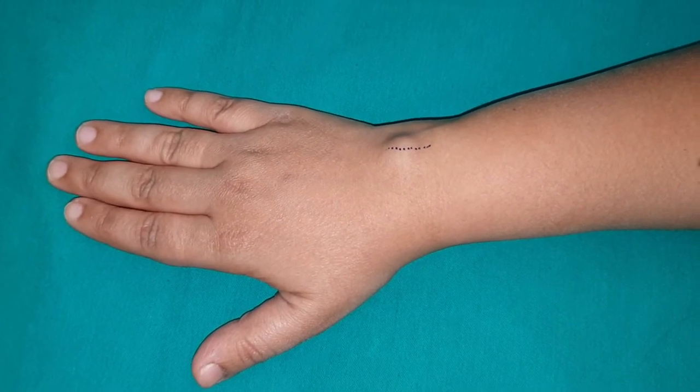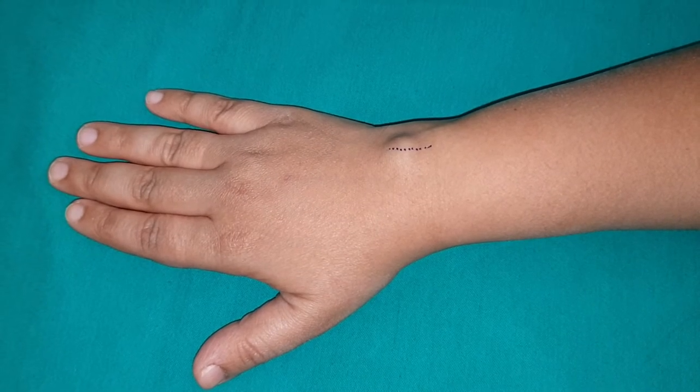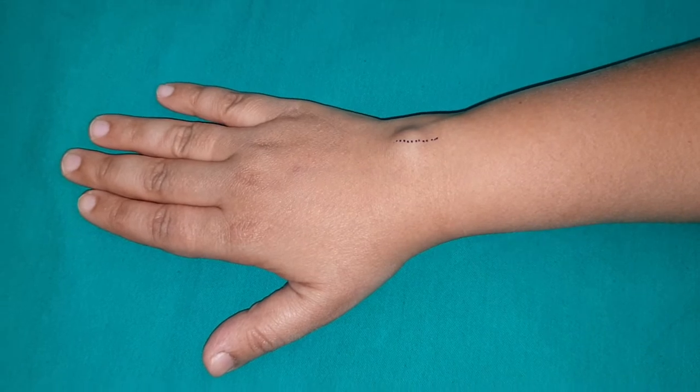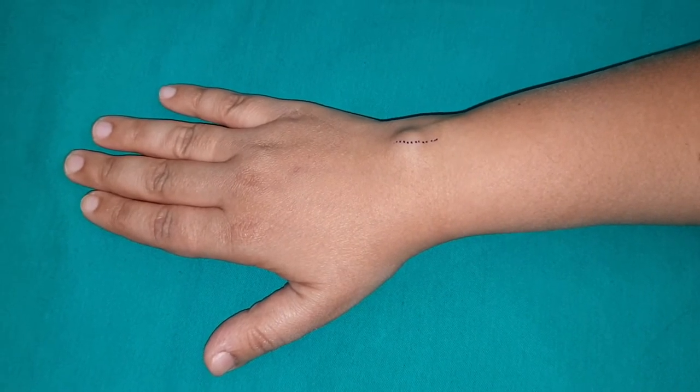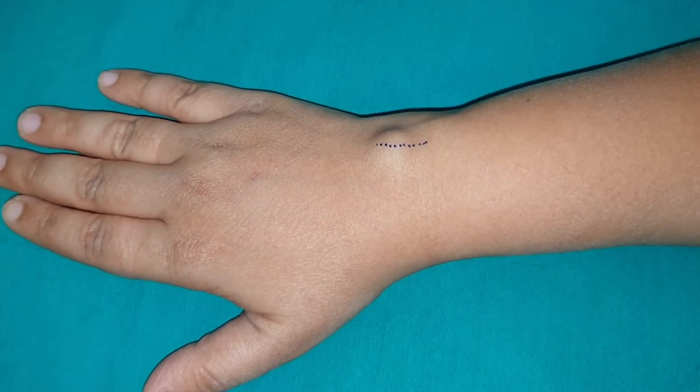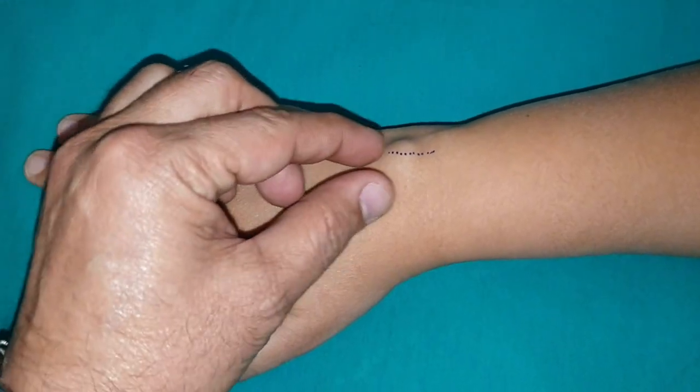Now I like to demonstrate the cardinal features of the ganglion. It's a soft, cystic, non-warm, non-tender, mobile swelling, but it's very important to understand the movement.